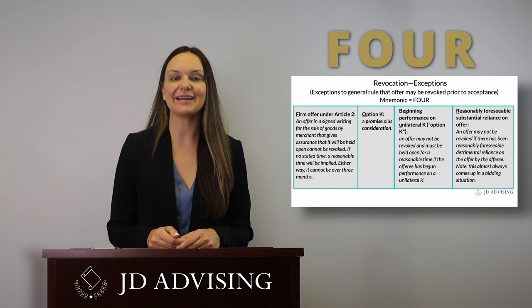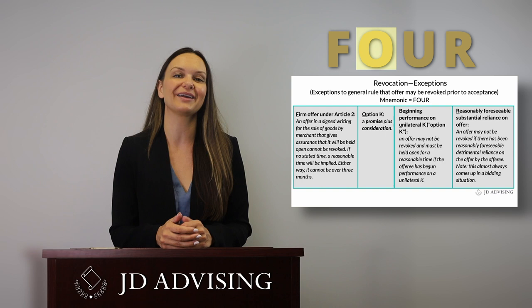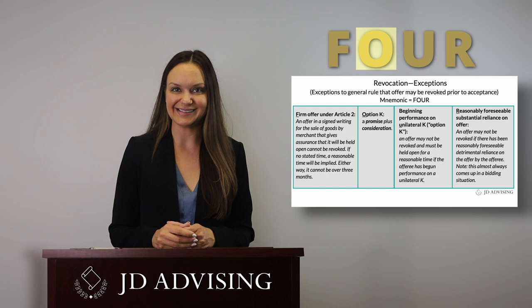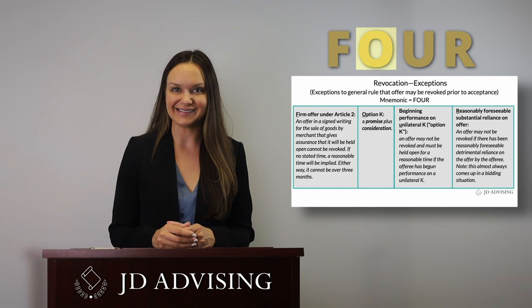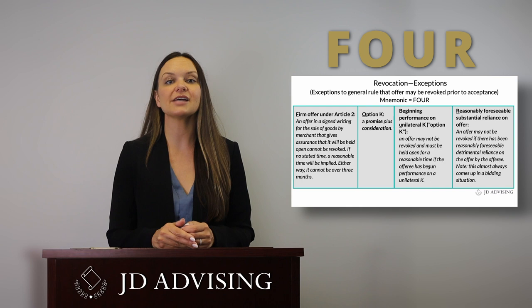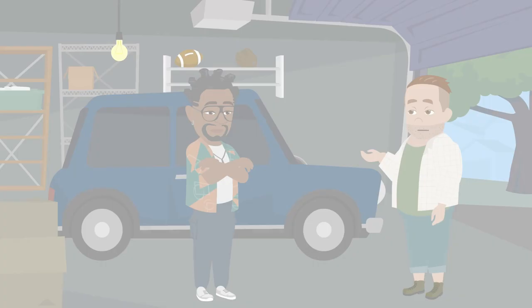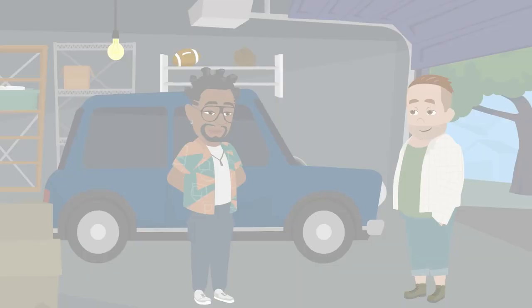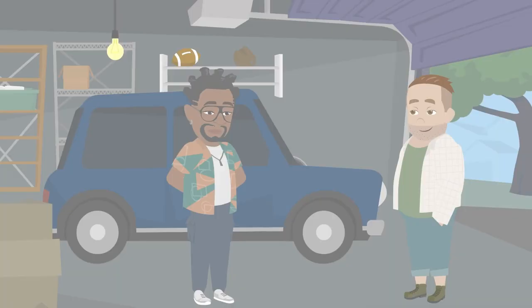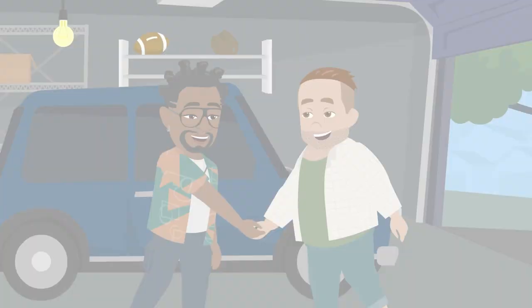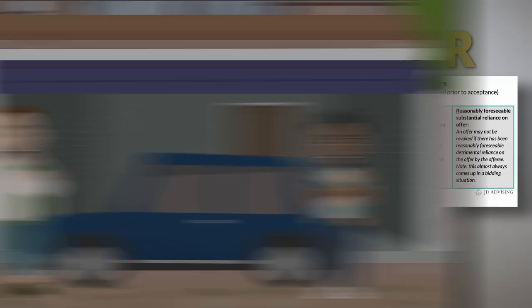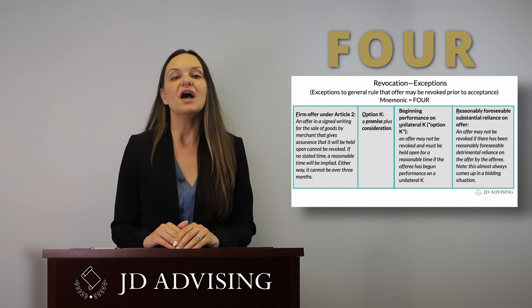Remember what an option contract is: it is when there is a promise to keep an offer open and it's supported by consideration. For example, A says to B, 'I'll sell you my car for $1,000.' B says, 'Let me think about it — will you keep the offer open until Sunday?' A says sure. Can A revoke this offer before Sunday? The answer is yes. We do not have any facts indicating consideration was exchanged between the parties, so this is merely a gratuitous promise. Thus, this can be revoked at any time prior to acceptance.